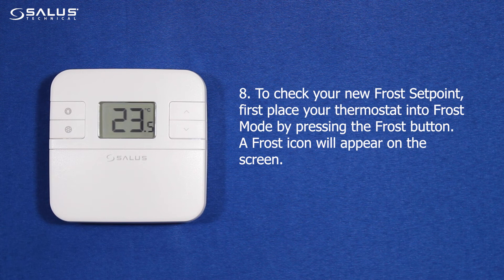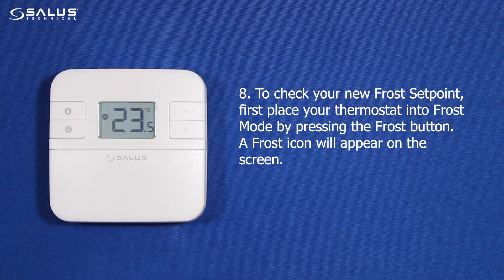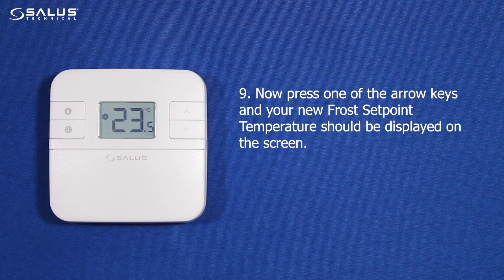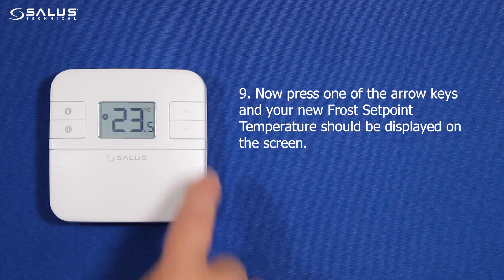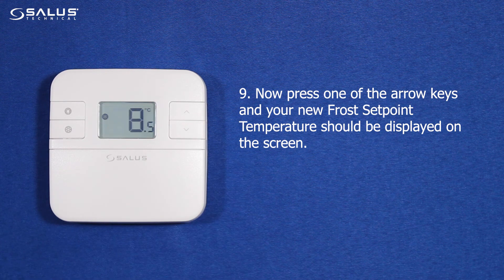Step 8: To check your new frost set point, first place your thermostat into frost mode by pressing the frost button. A frost icon will appear on the screen. Step 9: Now press one of the arrow keys and your new frost set point temperature should be displayed on the screen.